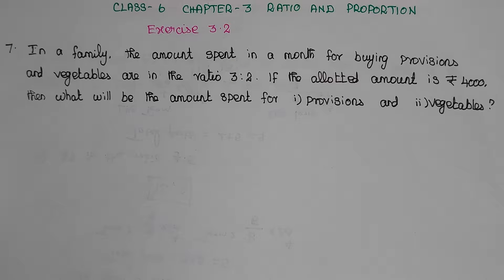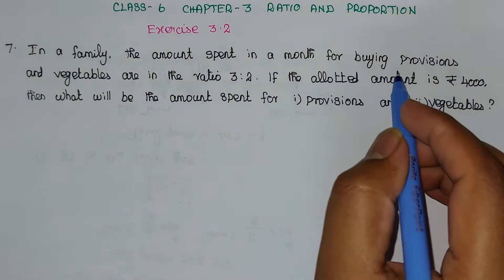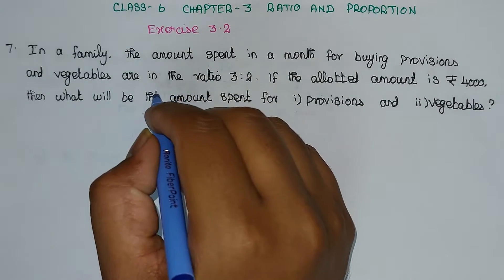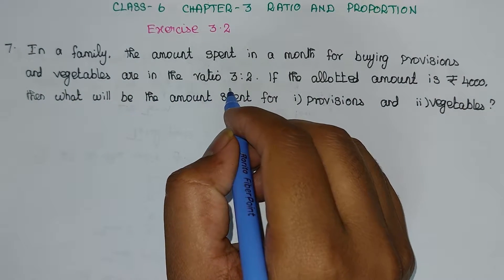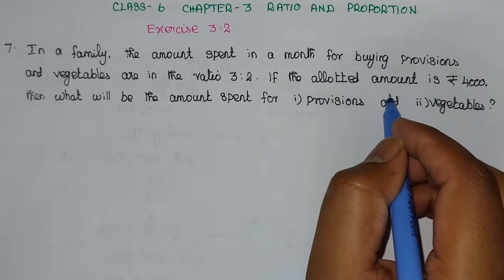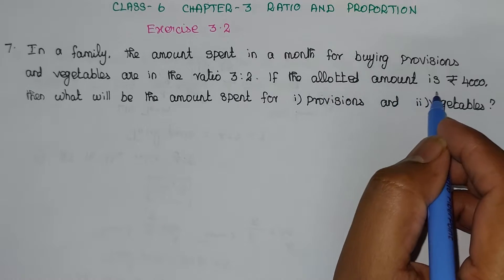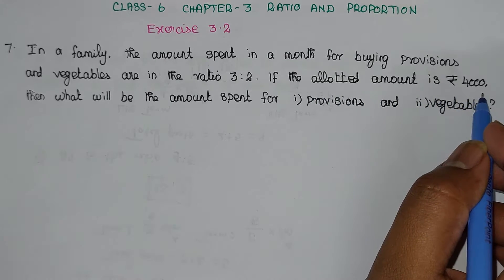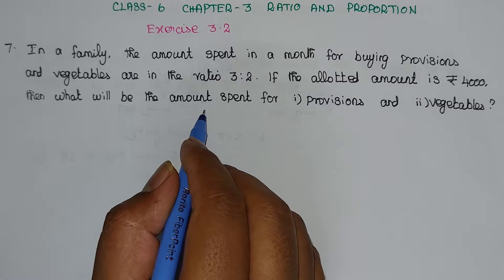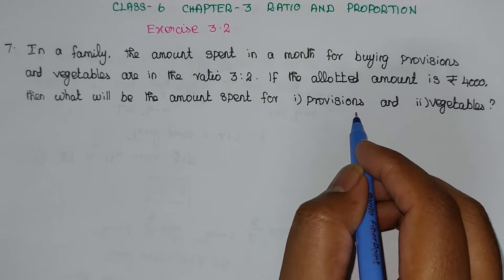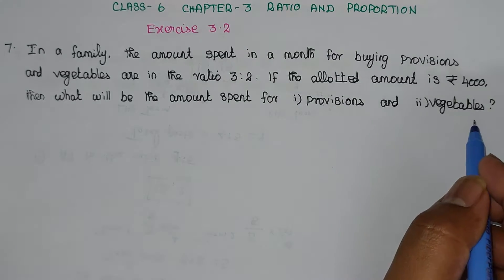In a family, the amount spent in a month for buying provisions and vegetables are in the ratio 3 is to 1. If the allotted amount is Rs. 4000, then what will be the amount spent for provisions and vegetables?